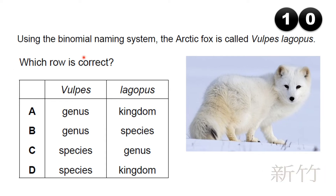Using the binomial naming system, the arctic fox is called Vulpes lagopus. Which row is correct? Vulpes is the genus and lagopus is the species. So the answer is B.